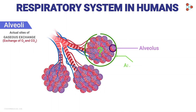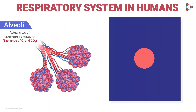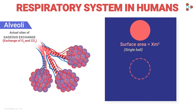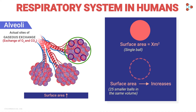Why do alveoli have several spherical ball-like structures? Why isn't a single alveolus a complete ball? Many smaller balls help in increasing the surface area. Imagine a single ball with a surface area of x square meters — if the same volume is occupied by 25 smaller balls, the surface area increases by many folds. Similarly here, the number of smaller structures ensures that surface area increases and maximum surface is available for gaseous exchange.